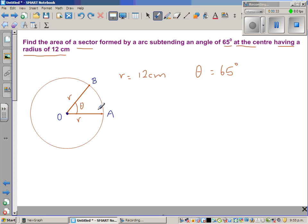I'll draw a figure. This is a circle and we want to find the area of this sector, so this shaded part is what we want to find. Here the arc AB is subtending an angle of 65°, so theta is 65°, and the radius of this circle is 12 centimeters.